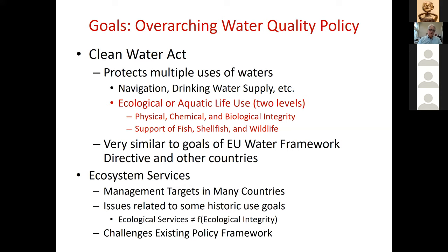Another direction for thinking about goals is ecosystem services — something state agencies and the EPA are interested in — but I won't get into that much today. It's important to keep in mind when thinking about how to use diatoms and ecological indicators: thinking about the services that aquatic systems provide, with aquatic life use being one of those.